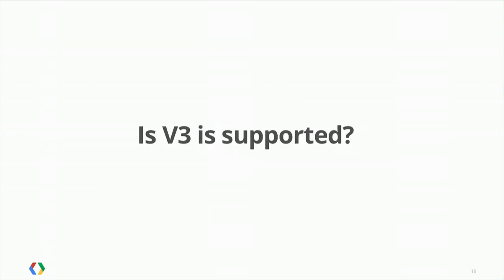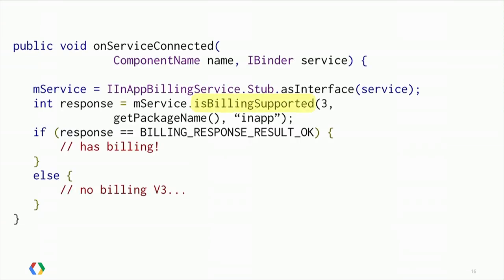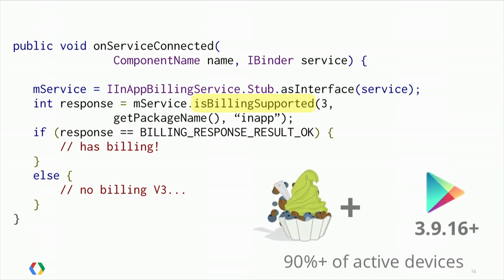Before you can make v3 API calls, you have to check that it's actually supported. You can do that by calling the isBillingSupported API call. The good news is that in-app billing is supported on a whole variety of devices running Froyo and above with a recent version of the Play Store. That was actually more than 90% of devices on the day we launched, which was a few months ago, and right now it's much more than that.